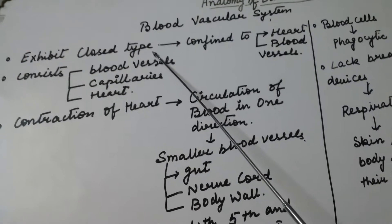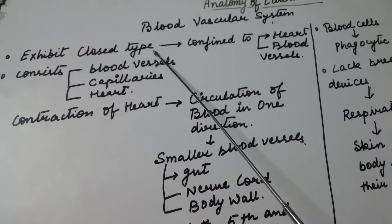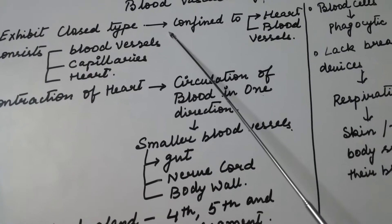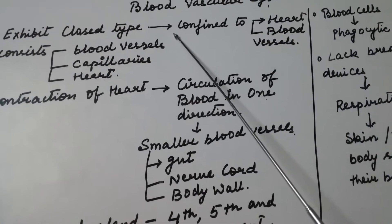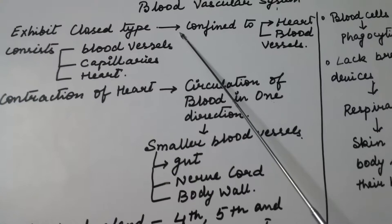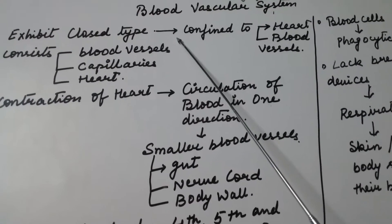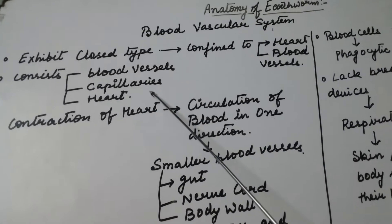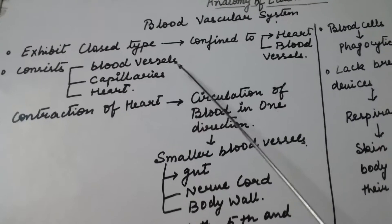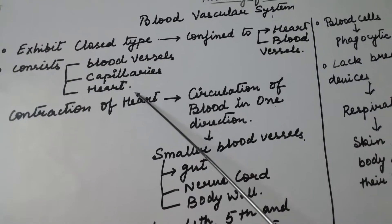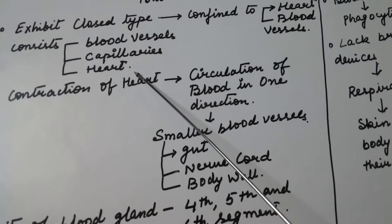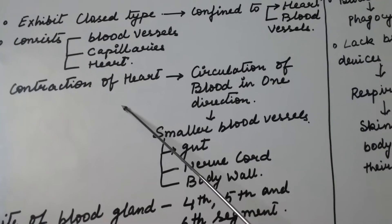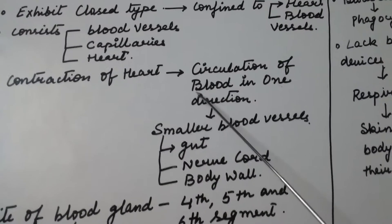Since earthworm exhibits a closed-type blood vascular system, the blood is confined to the heart and the blood vessels. The blood vascular system of earthworm consists of blood vessels, capillaries, and the heart.